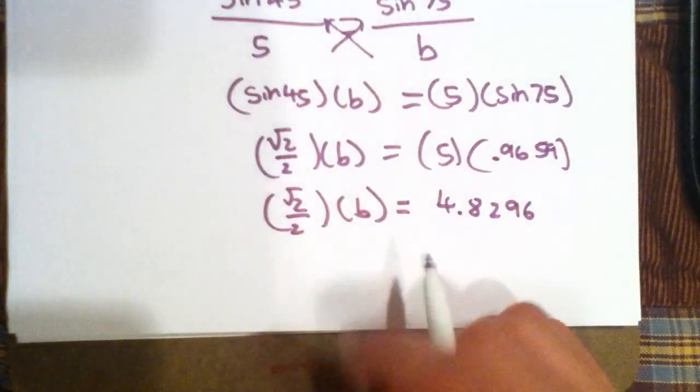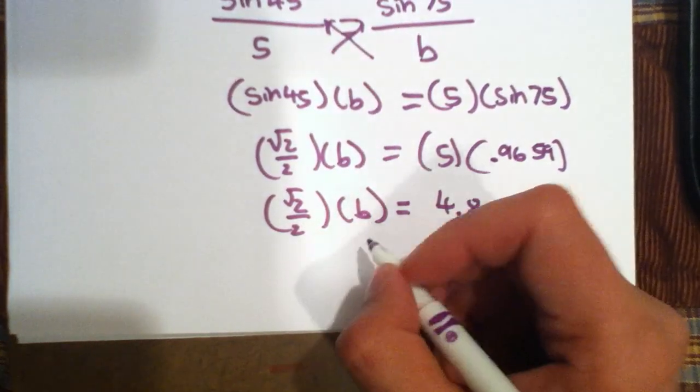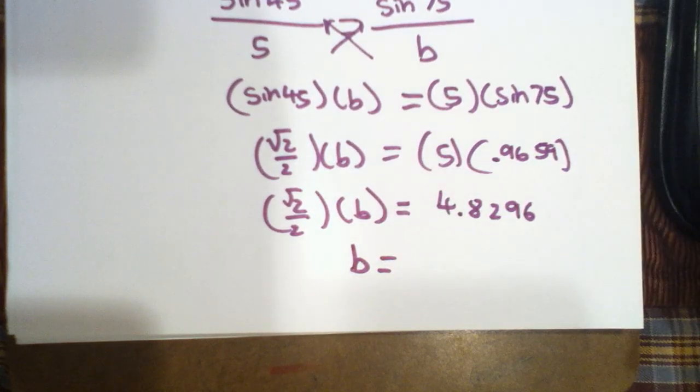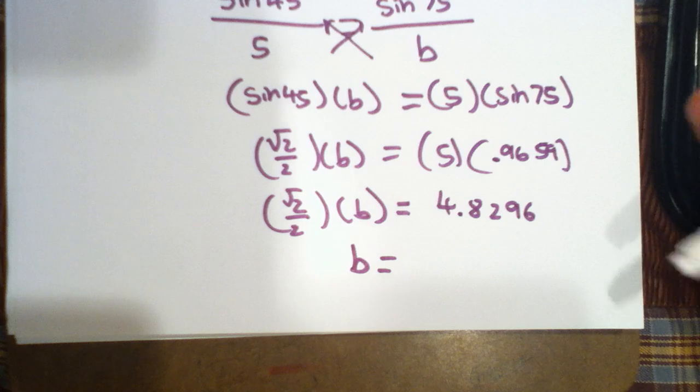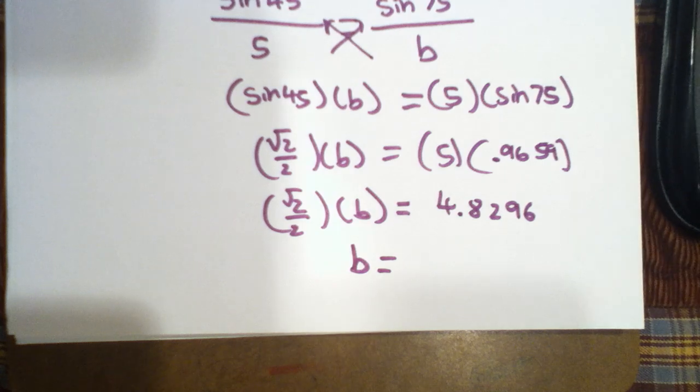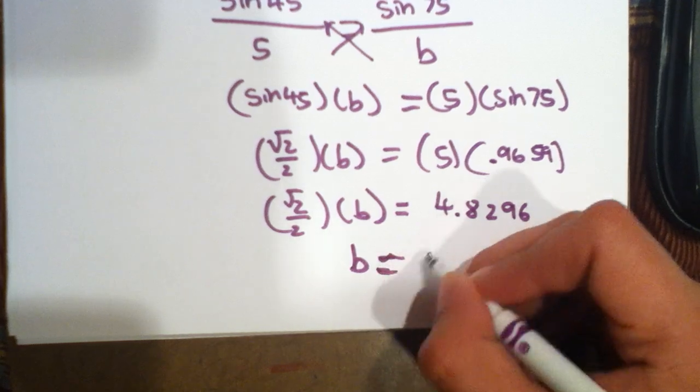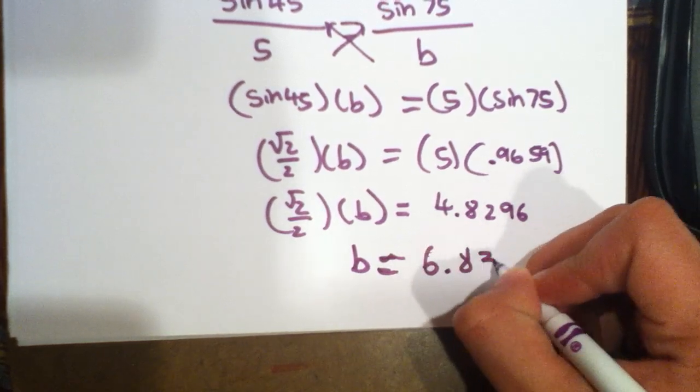Now, to solve for B, we divide both sides by square root of two over two. And we achieve that B is square root of two divided by two. And we get B is approximately 6.830.